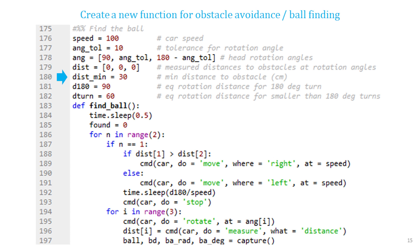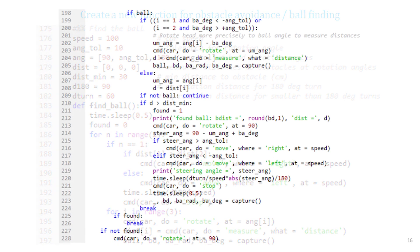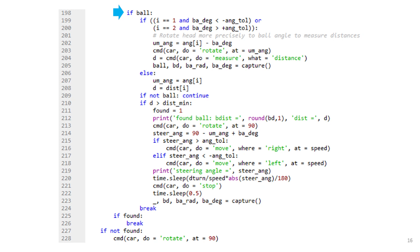After the car detected an obstacle and stopped the car would rotate its head three angles straight right and left. At each rotation angle as before the car would detect the distance to an obstacle but it would also capture an image that would detect the presence of a ball.